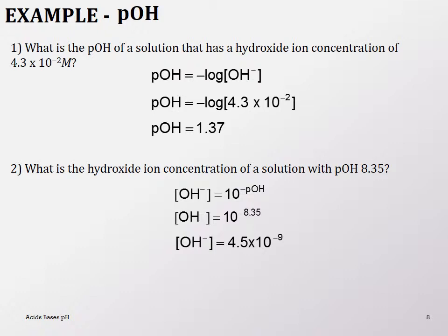Let's look at a pOH example. What is the pOH of a solution with a hydroxide concentration of 4.3×10⁻² molar? Very simple: pOH = −log[OH⁻], just as you would for hydronium ion. The answer is 1.37, which means it is actually a strong base.